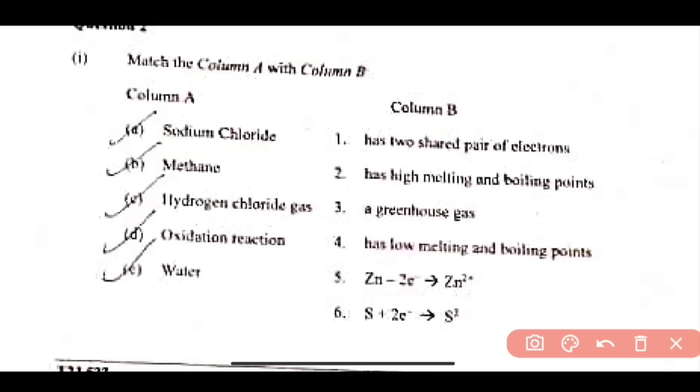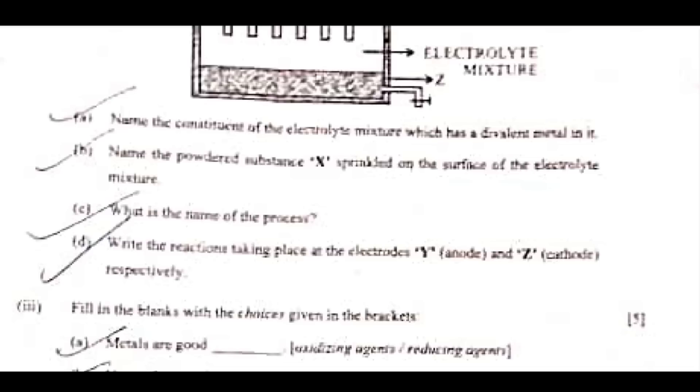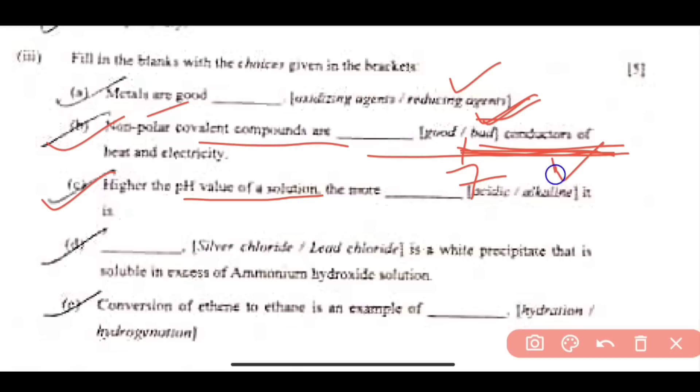Look at the following, we are going to see MCQs discusses. Sodium chloride has high melting and boiling point. Second is methane, methane is a greenhouse gas, yesterday we discussed in MCQs. So this will be HCL gas, HCL will be option number 4, that is has low melting and boiling point for HCL. Next is oxidation reaction, so this will be ZN minus 2E minus, 2 electron minus, so this will be oxidation reaction. Water has two shared pair of electrons, this will be fill in the blanks. Metals are good reducing agents. Next is non-polar covalent compounds are bad conductors of heat and electricity. Next is higher the pH value of a solution, pH value is 7 neutral, if it is high, it will be alkaline. Next is silver chloride, white PPT, silver chloride. Last is hydrogenation.